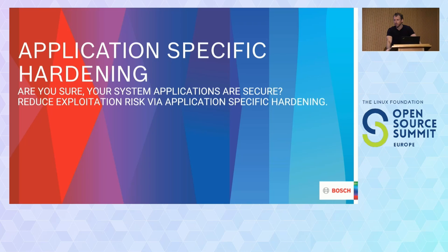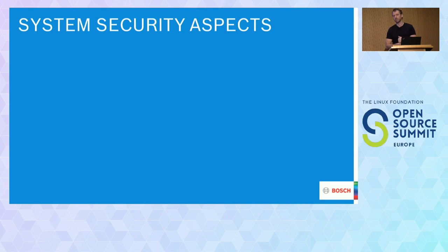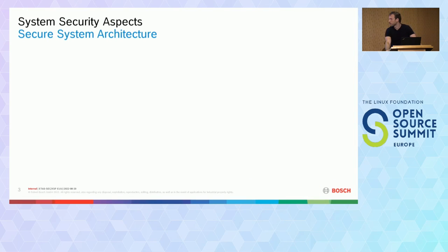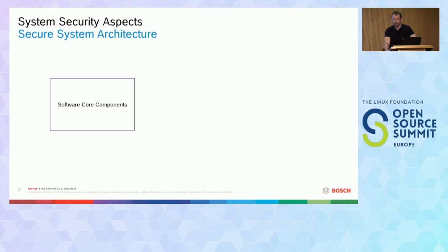We'll go into configurational settings which we apply to applications to make them more secure, and especially why we do this. Obviously we want to have a secure system. So what aspects can we enforce? Normally we will try to have a secure system architecture — isolating and segregating components from each other, physically or logically, with fitting security measures on top.